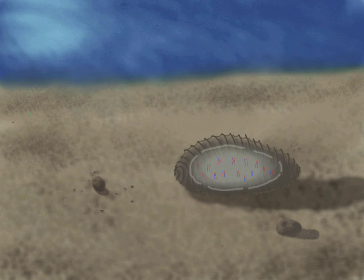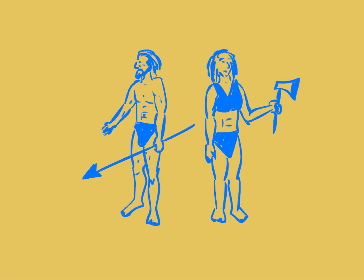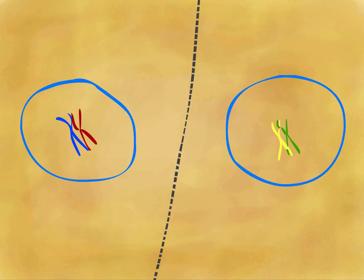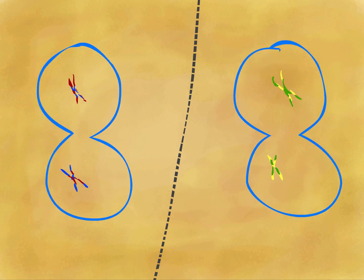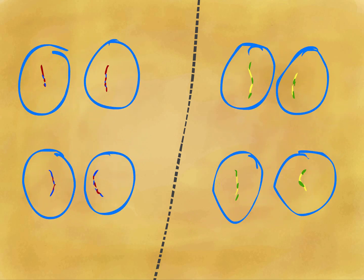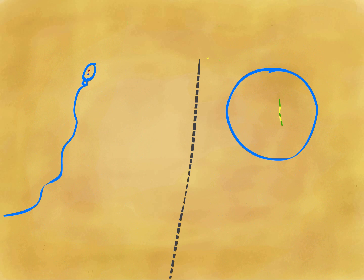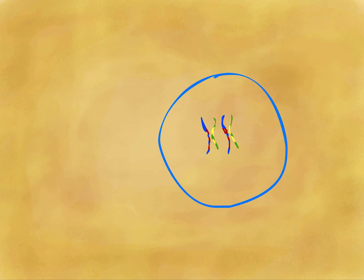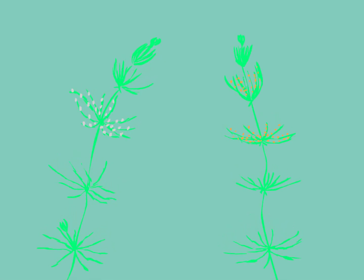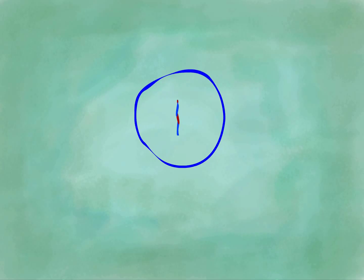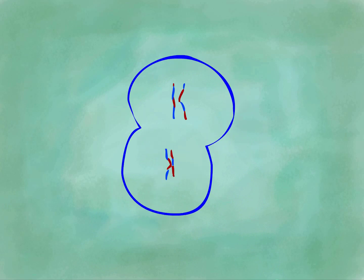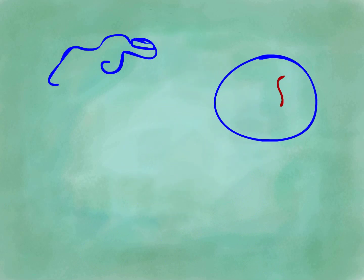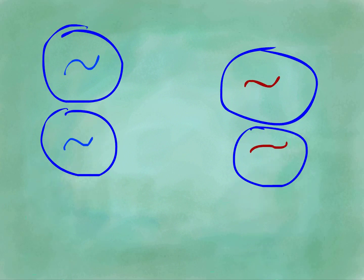Before dividing even once, the diploid zygote undergoes meiosis — or so we think, as this has yet to be confirmed. Humans are diploid; meiosis occurs before fertilization in order to create haploid gametes from our diploid genome, forming a diploid zygote that then undergoes mitosis. Chara rousbiana is haploid. Meiosis occurs after fertilization in order to create its haploid genome from a diploid zygote, formed by haploid gametes that were created by mitosis.